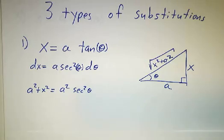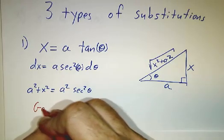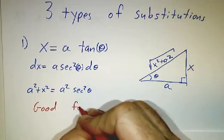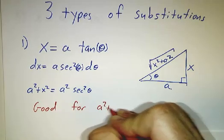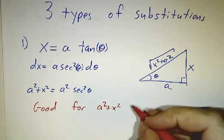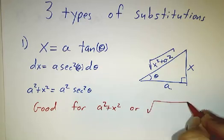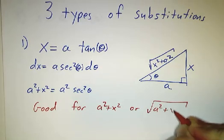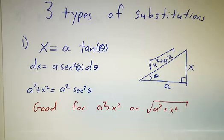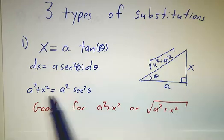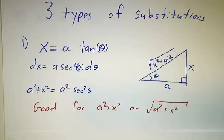So this substitution is good whenever you see an a squared plus x squared in your integral, and especially whenever you see a square root of a squared plus x squared in your integral. This substitution makes what had been this ugly square root into a times the secant of θ. Not bad.